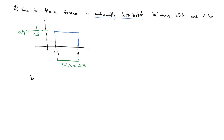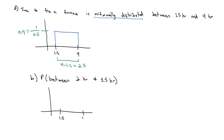Let's take a look at one more example. What is the probability that it takes between 2 hours and 3.5 hours to fix the furnace? Again, I'm going to draw a picture. The whole thing goes from 1.5 to 4, and 1 divided by the length gives us a height of 0.4. I draw my rectangle, and then I want to be between 2 and 3.5. That shape is also a rectangle, and we know area equals probability.